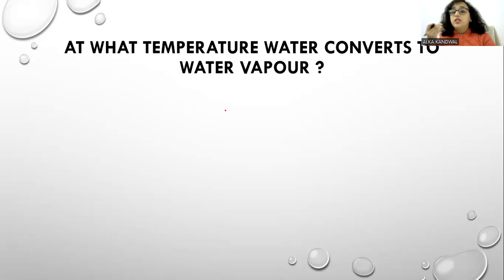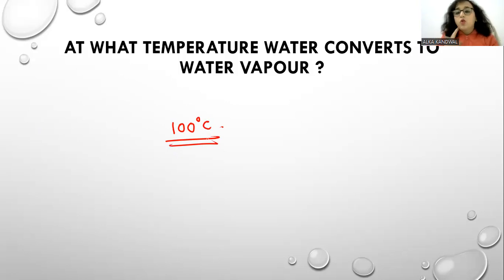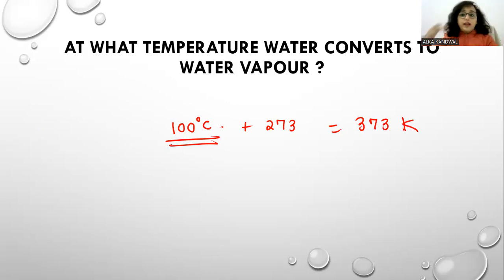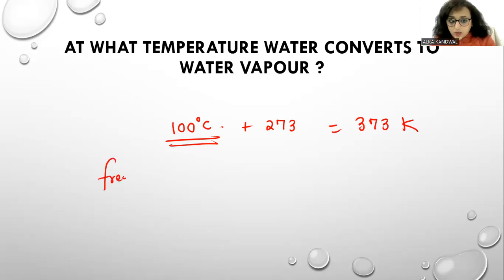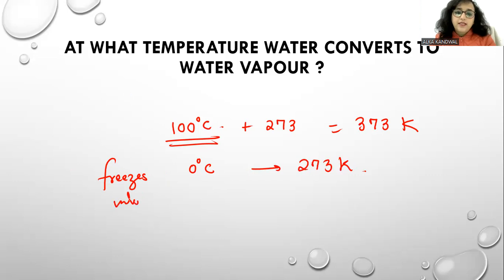At what temperature does water convert into water vapor? The answer is 100 degrees Celsius. If the option is in Kelvin, we add 273 to the Celsius value, so 100°C = 373 Kelvin. At what temperature does water freeze into ice? That is 0 degrees Celsius, which is 273 Kelvin. Remember: boiling point is 100°C / 373K, and freezing point is 0°C / 273K.